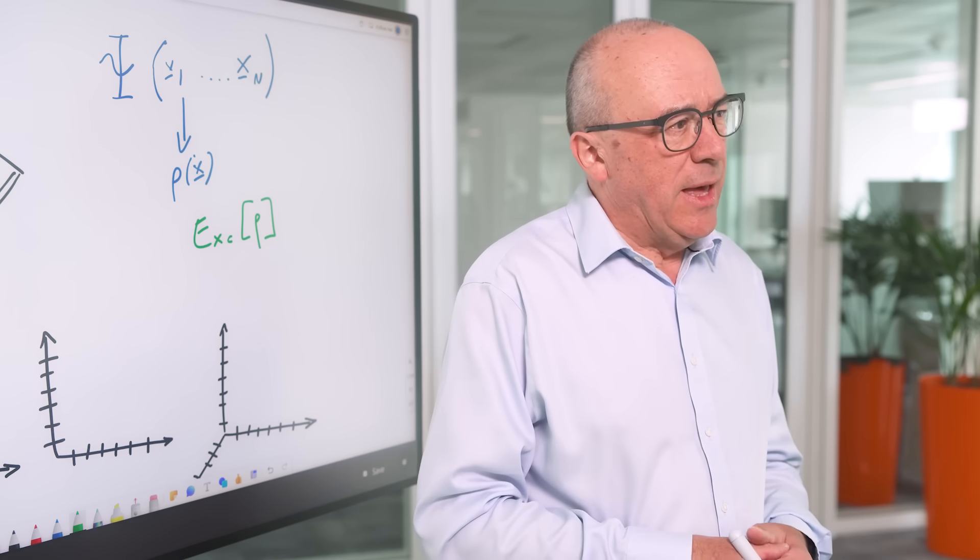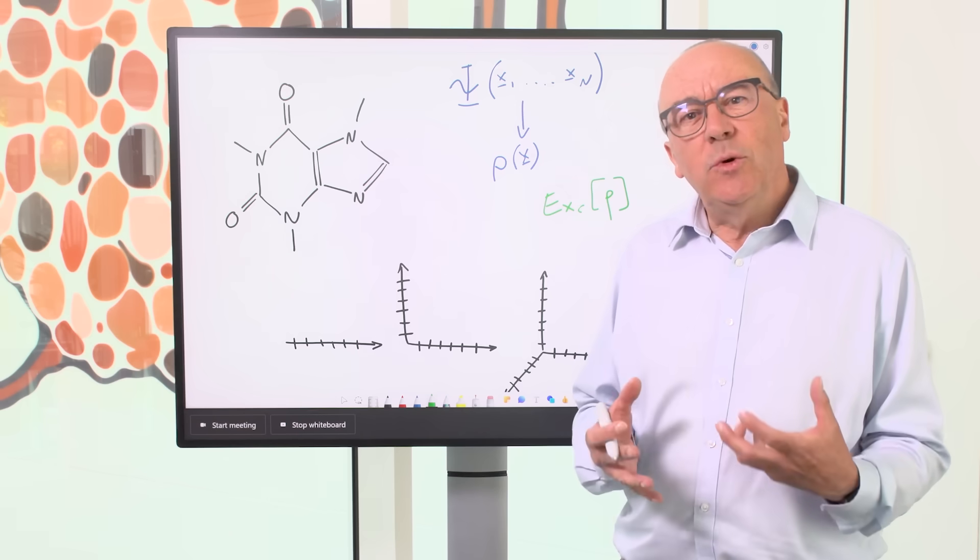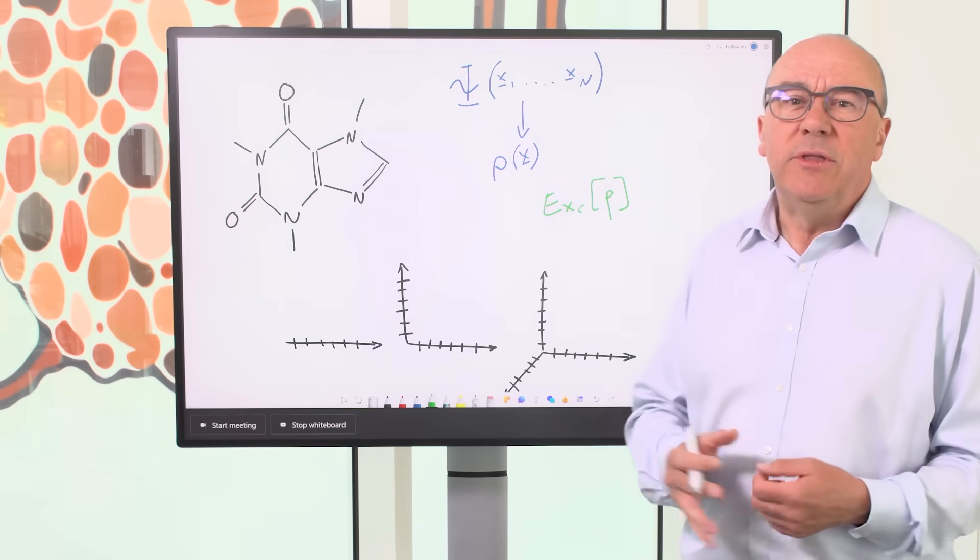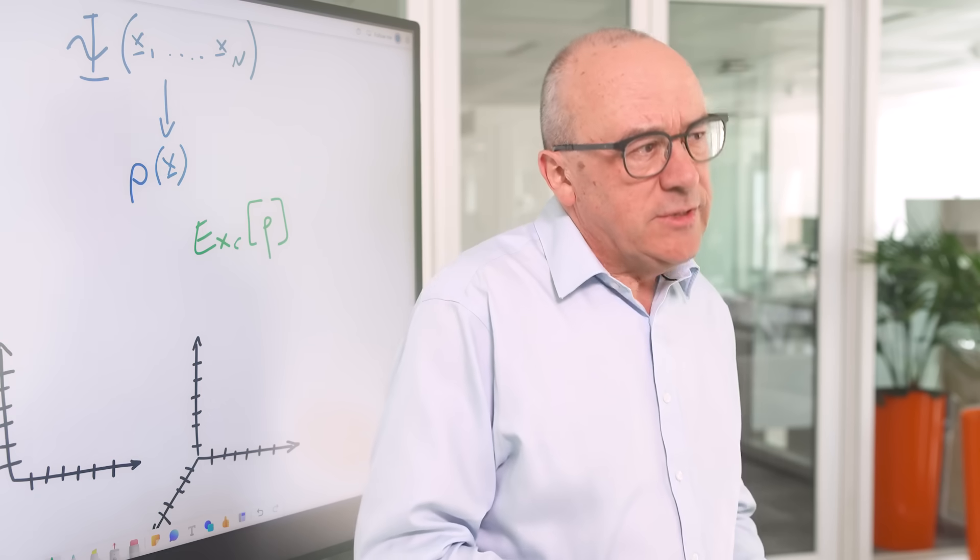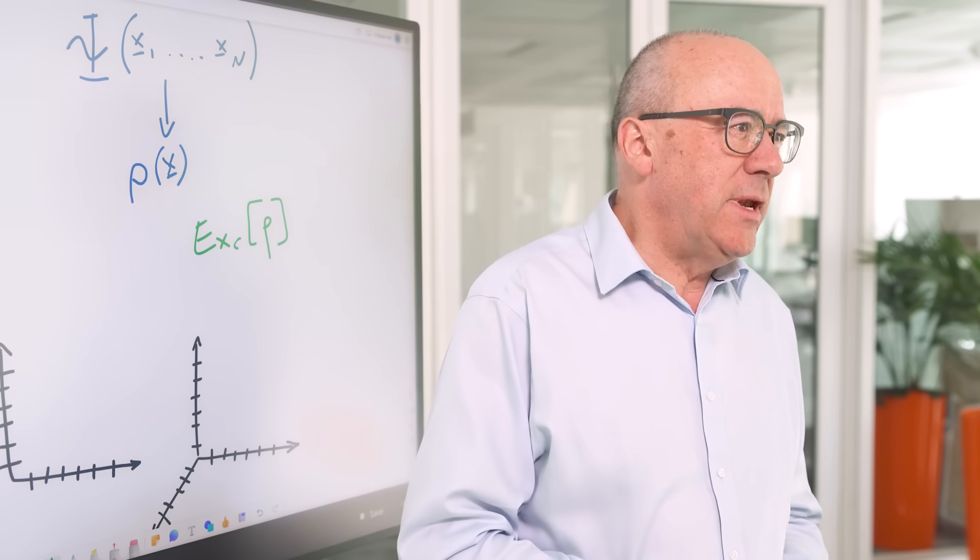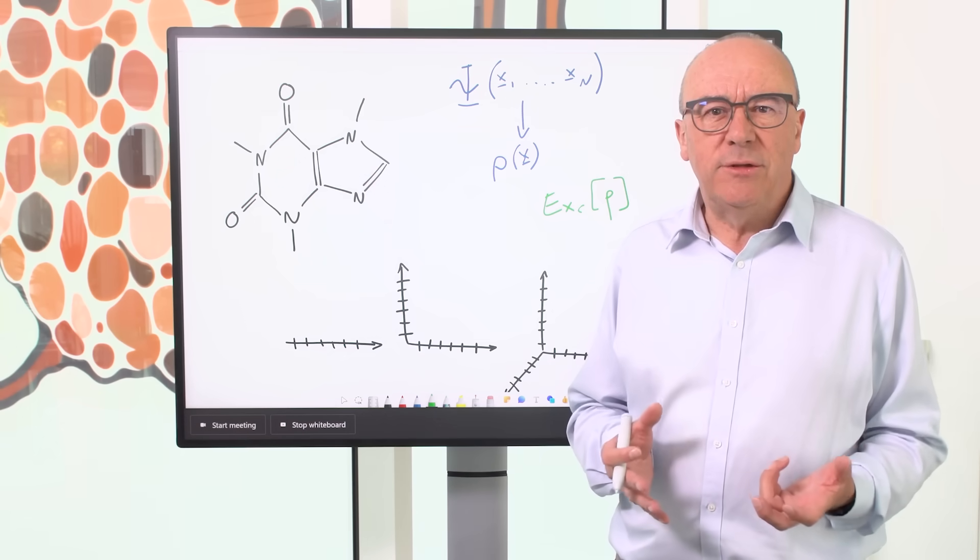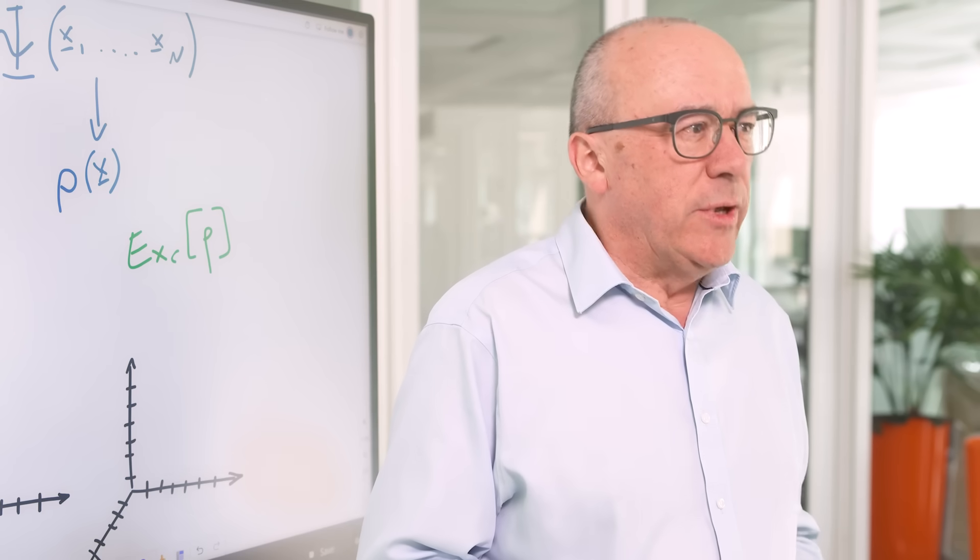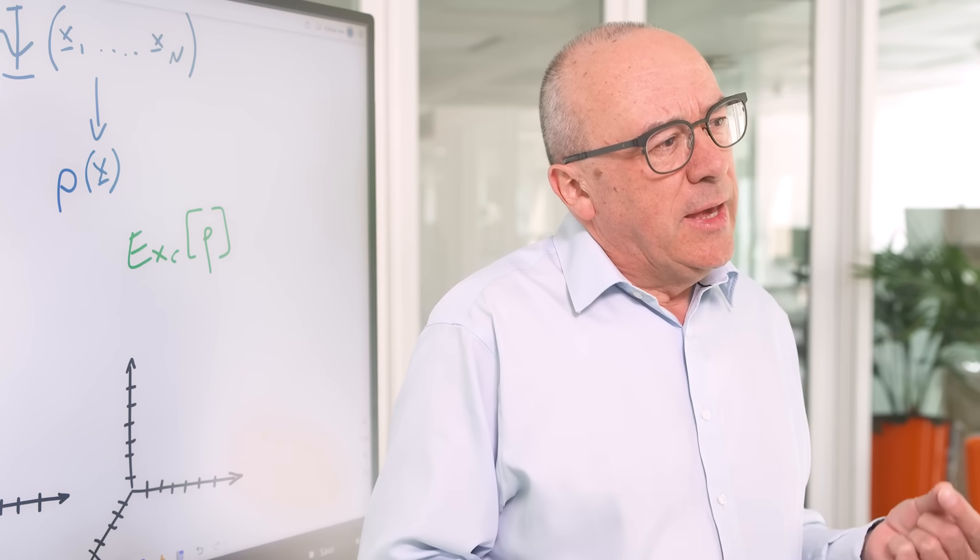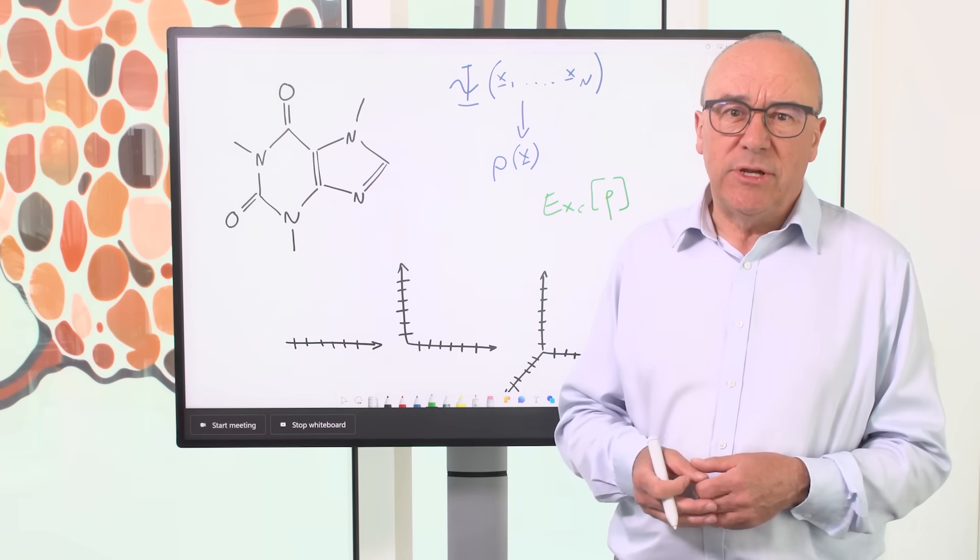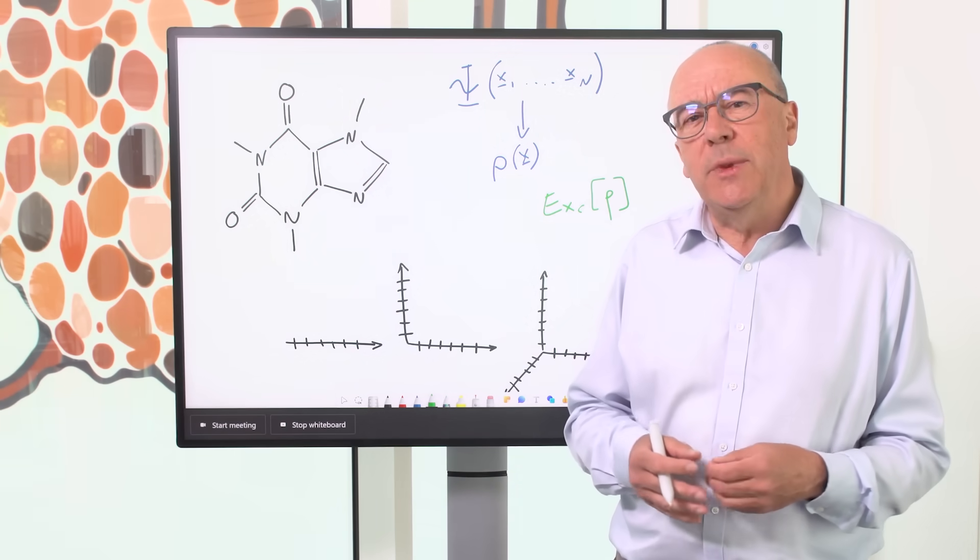So we turn to the power of deep learning. And so what we've done is to train a neural network to model the Exchange Correlation Functional. Now, to do this, the first thing we had to do was to create a training data set. We created a data set of 100,000 examples, each of which was obtained by an accurate solution of Schrödinger's equation, which was computationally expensive and required a lot of human expertise.